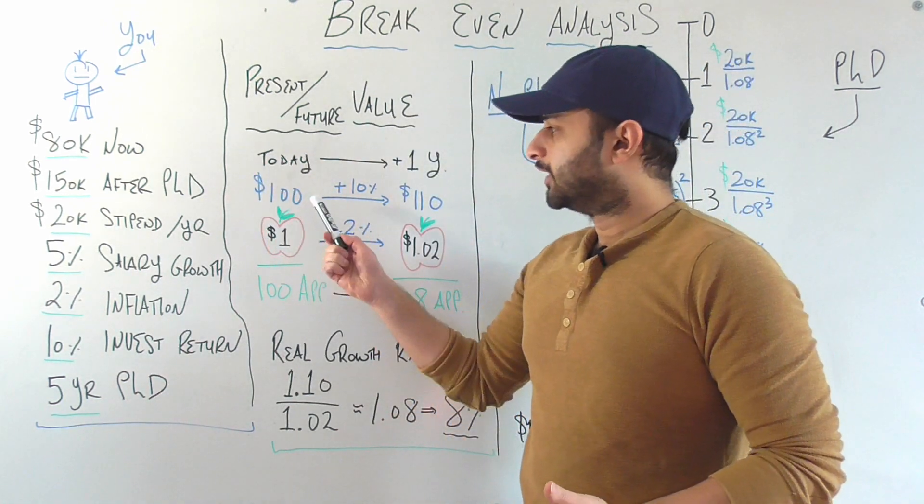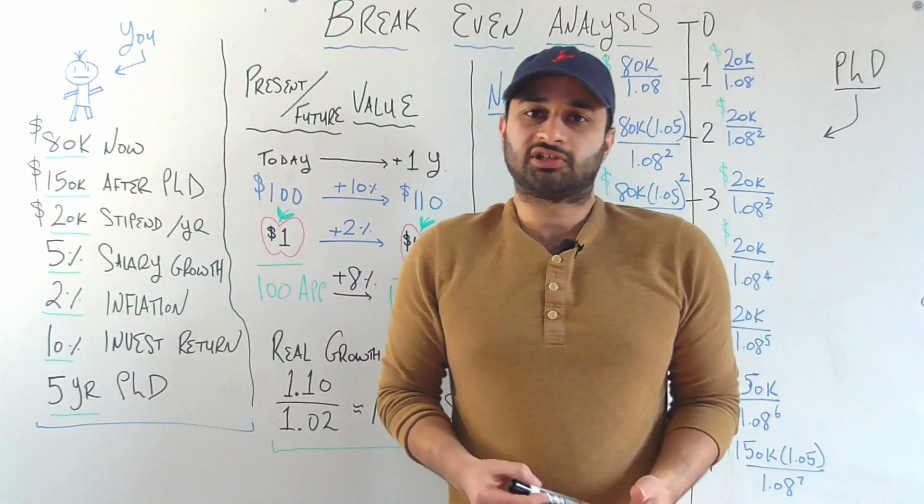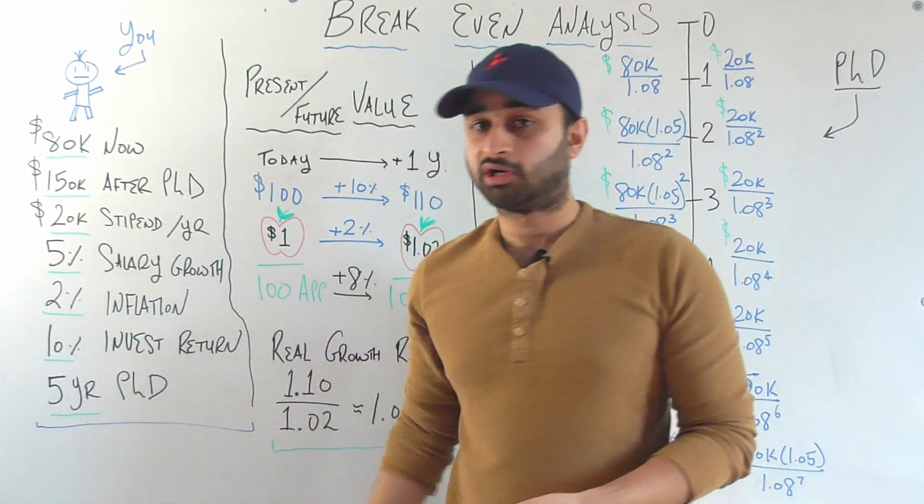So let's say you have $100 today. Now we said that you have some kind of investment vehicle, for example, some slow steadily growing stock in the stock market, which is going to grow by 10% per year.